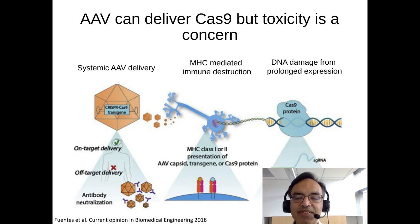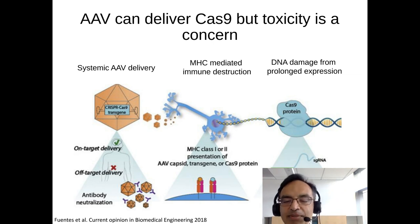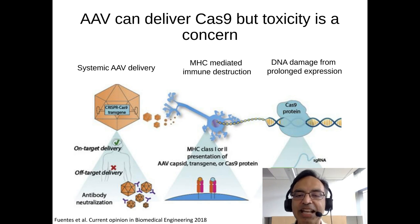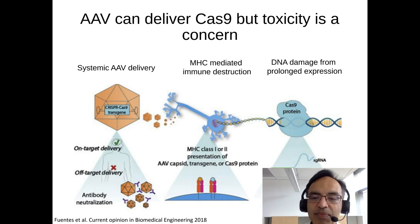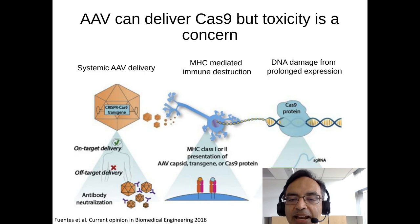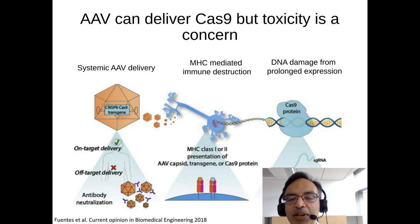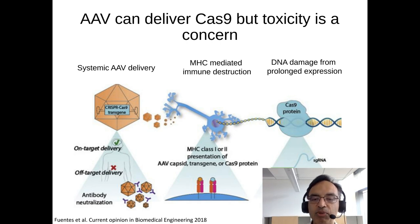The problem with using AAV for gene editing is that the delivered Cas9 will be expressed in cells for at least four to five years, and this causes two problems. First, because it's a foreign protein, our immune system will recognize that cells are expressing foreign proteins, and these cells will be targeted for MHC1-mediated DNA damage. In addition, continued expression of Cas9 is problematic because of the potential for off-target DNA damage — Cas9 has about a 1% to 2% off-target DNA damage rate, and if expressed for five years, the probability of generating genetic mutations is quite high.